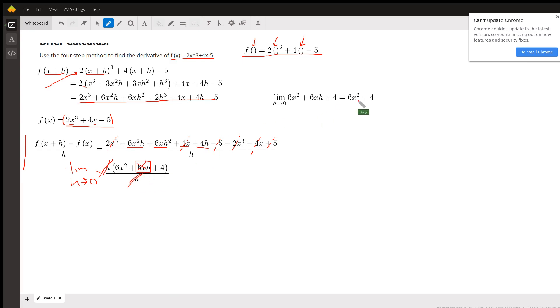And 6x squared plus 4 is the derivative of the original function. That is a formula for slopes of tangent lines to the graph of the original function.